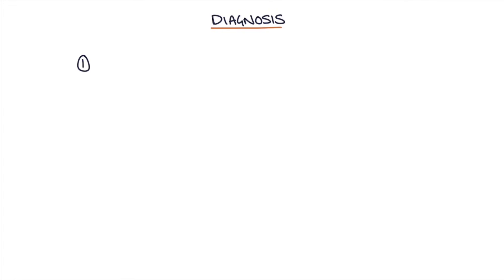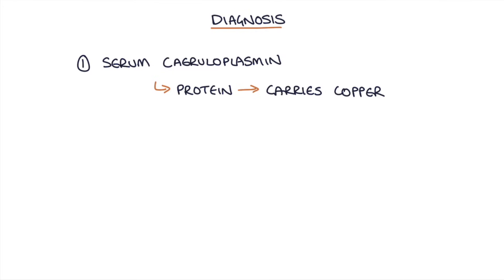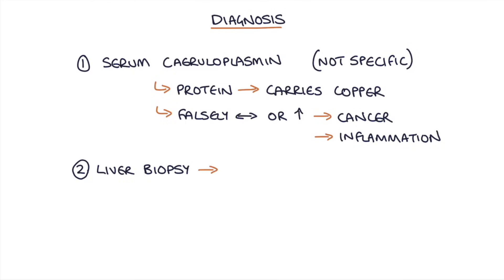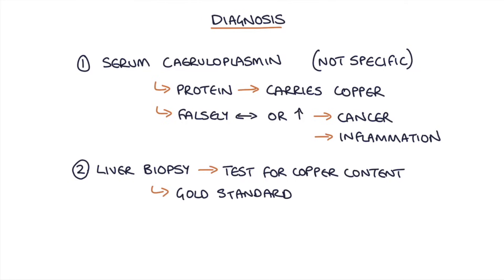If you suspect someone has Wilson's disease, the initial investigation of choice to screen for it is to do a serum ceruloplasmin — a protein that normally carries copper in the blood. It can be falsely normal or elevated in cancer or inflammatory conditions, so don't rely completely on this result in those cases. It's not specific to Wilson's disease. The definitive gold standard test is a liver biopsy to test the liver for its copper content.